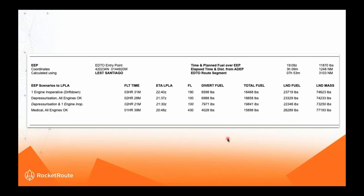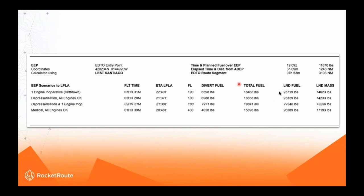Expanding the sections, we have our breakdown of scenarios from the EEP. In the top-right corner: planned fuel, elapsed time, and the EDTO route segment — in this demonstration seven hours 53 minutes and about 3,000 nautical miles. The scenario breakdown shows flight time, ETA, flight level, fuel required for diversion, total fuel from departure, landing fuel, and landing mass — so you can do an ad hoc one-way performance calculation based on that indicative figure and get ahead of the curve on landing mass calculations if diverting.